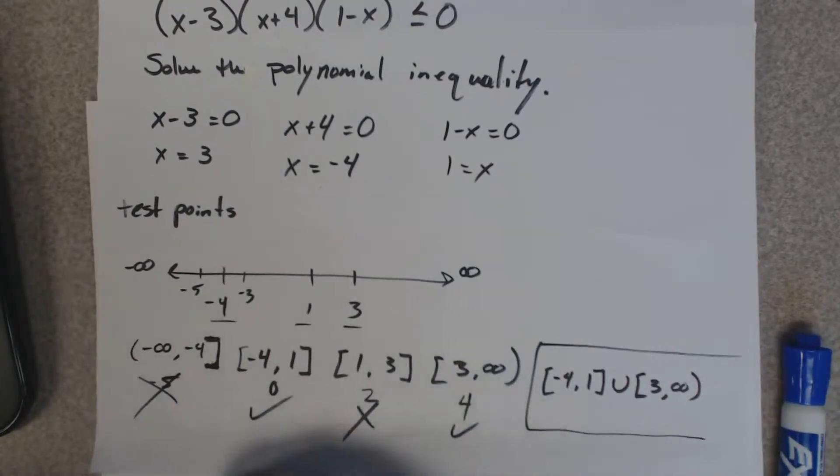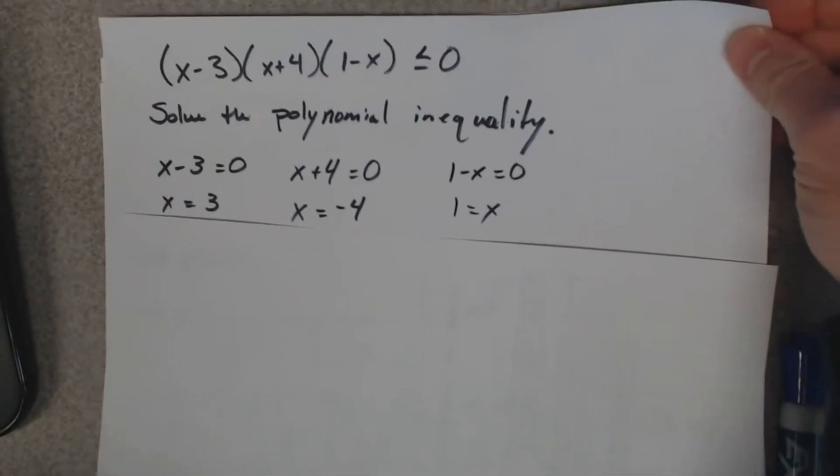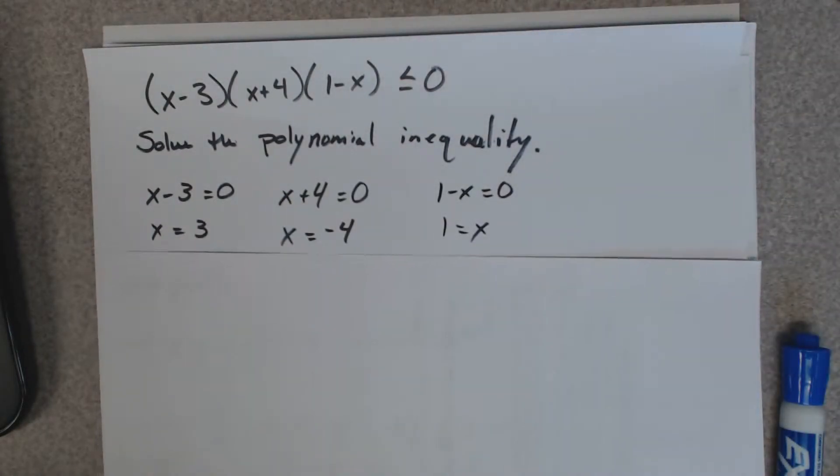But there is a trick though. You still have to find these numbers right here. Some people call them the critical values, but since we're doing it with a graph, they're the x-intercepts. So you still have to find the x-intercepts.